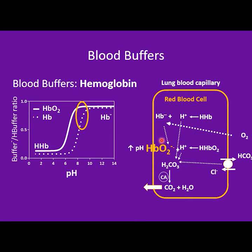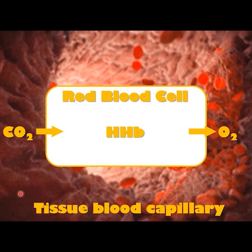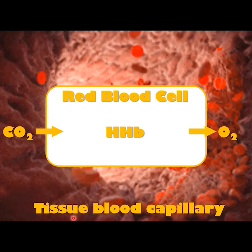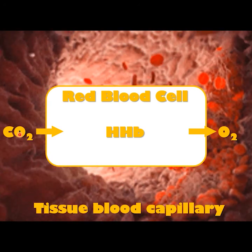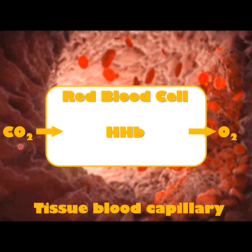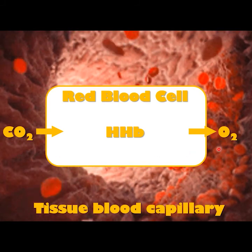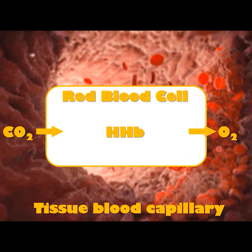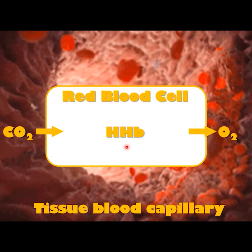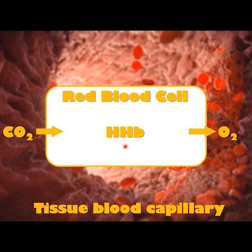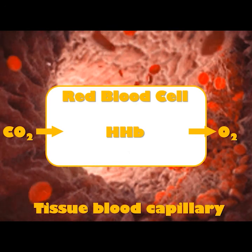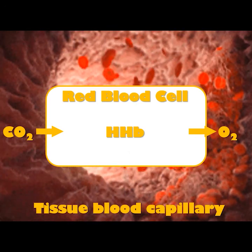Here is a key point: in tissue blood capillaries, carbon dioxide enters red blood cells, oxygen leaves red blood cells, and the preferred form of hemoglobin is deoxyhemoglobin in the acidic form.